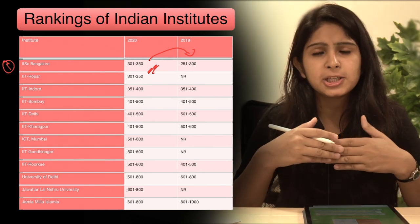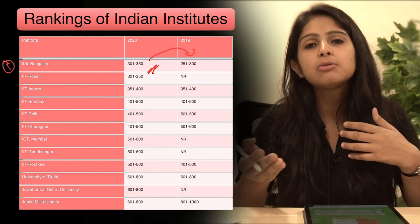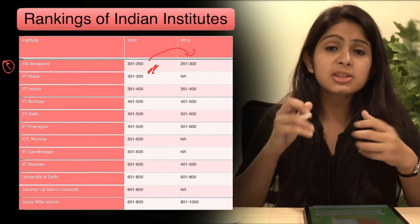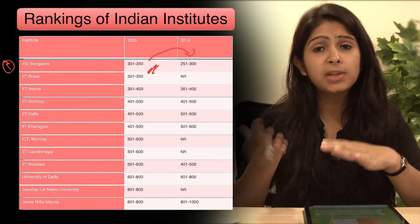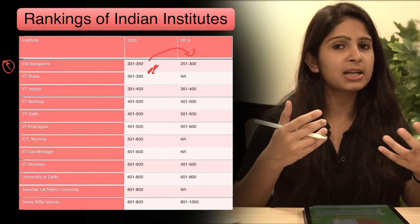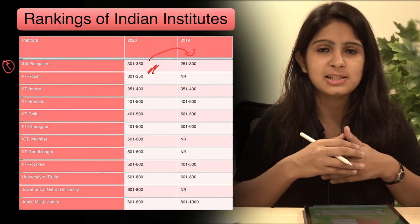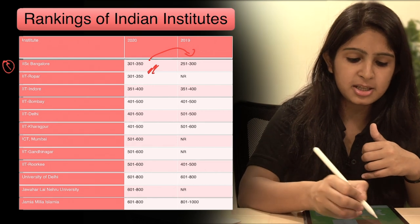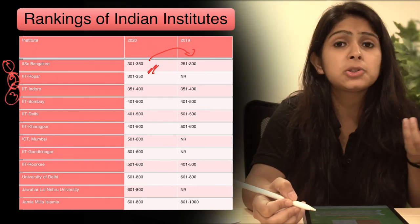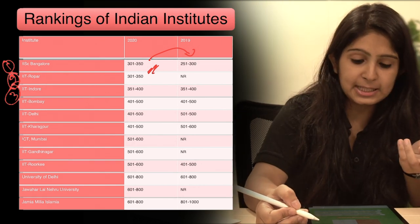So Times Higher Education rankings mein kya hota hai, 300 tak to ye sare institutes ko rank dete hain, aur 300 ke baad jitne bhi institutes rank karte hain unke groups bana diye jate hain rather than ki unko ek rank di jate hai. Like jitne bhi institutes ki rank 301 se 350 ke beech mein hogi, un sab ko 301 to 350 ke group mein categorize kar diya jayega. So IIT Ropar aur Indian Institute of Science ne ye place hasil ki hai. So now moving on to next, aap dekh sakte hai uske baad IIT Ropar ka number hai and uske baad IIT Indore jo 351 to 400 category mein fit ho raha hai. So last year bhi uski position yehi thi.